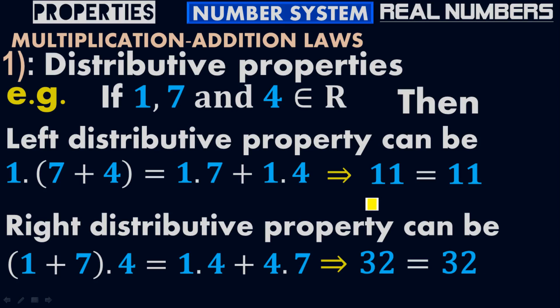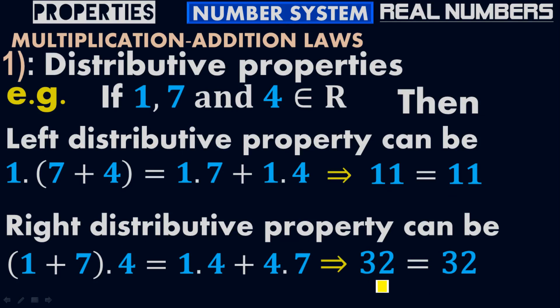That is how we got the proof: for the left distributive property, the left side equals the right side. Similarly, for the right distributive property, the left side equals the right side.